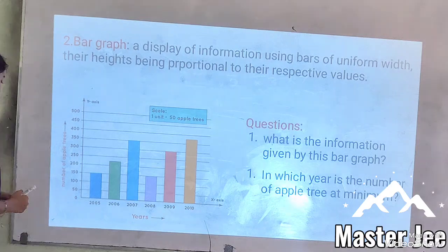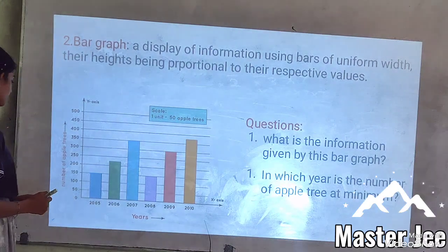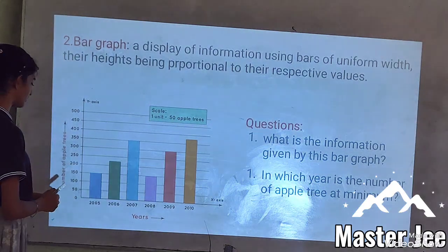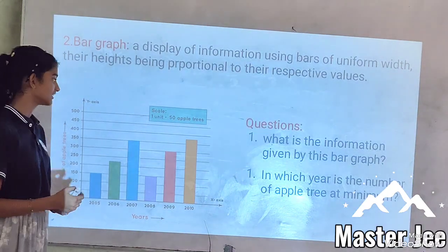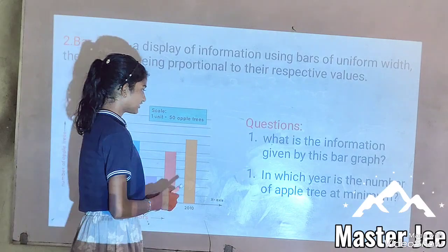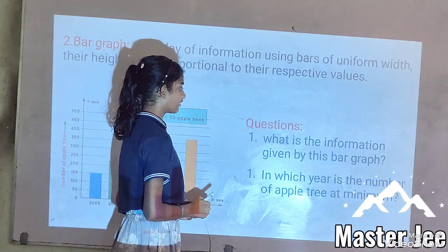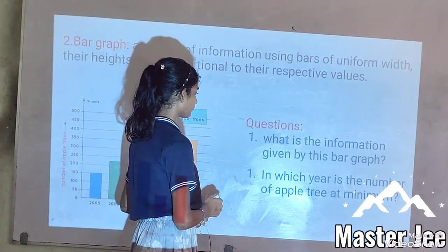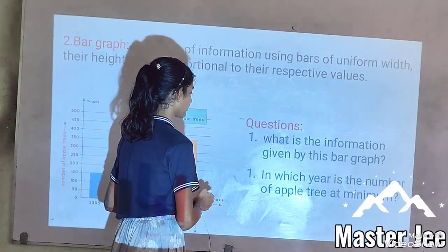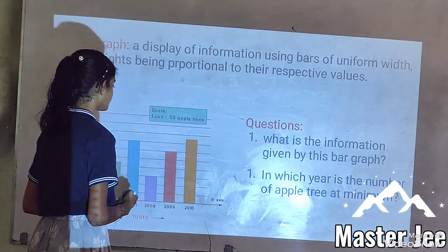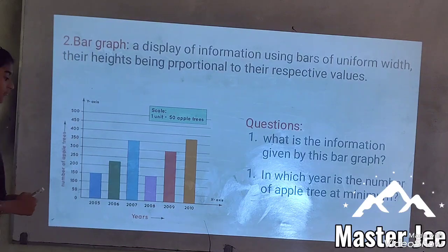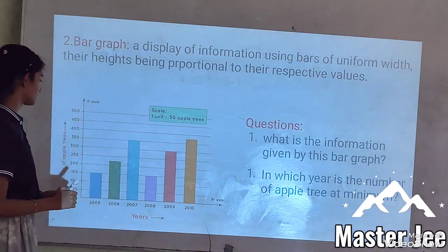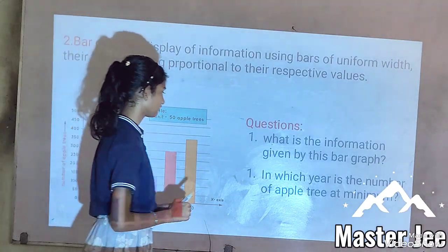Here is a bar graph representing the number of students throughout the years. Question number one: What is the information given by this bar graph? The number of students in the year 2000 is given.